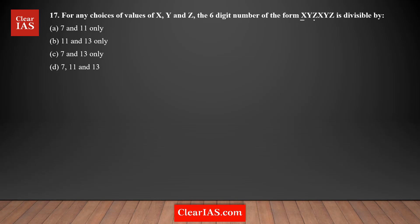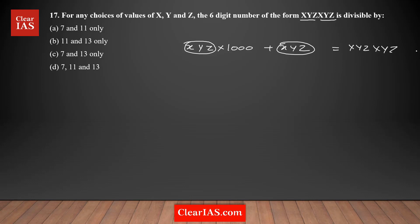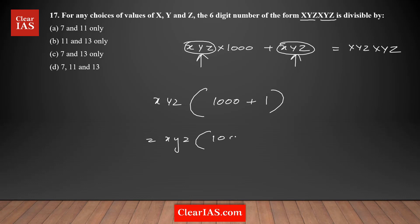Notice the pattern: xyzxyz can be written as xyz × 1000 + xyz. Taking xyz as a common factor gives xyz × (1000 + 1), which equals xyz × 1001.